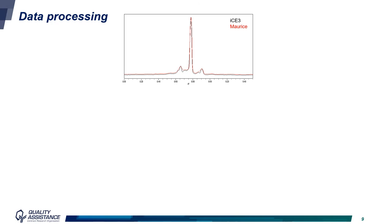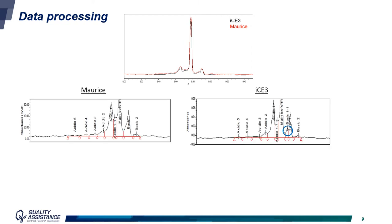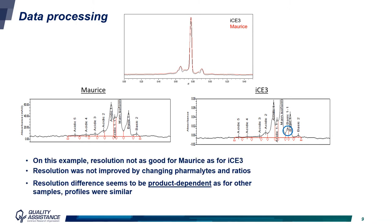As a first approach, electrophorograms obtained on both systems were compared. In this example, the black line represents the signal of I3 and the red line the data for MORRIS. Electrophorograms are overall comparable. Only in the basic region, there seems to be — for this example — a bit less resolution between two peaks, as you can see with the blue circle on the right. We tried to improve the resolution between these peaks on MORRIS by changing ampholytes and their ratios, but we were not able to reach the same resolution as seen on I3.